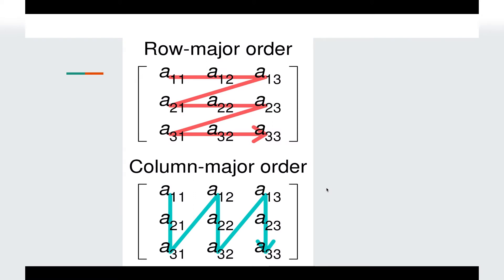This image shows both traversals. The first one is the row-wise traversal — what is happening here is that we first pick the first row and traverse through all the columns in it. If you look at the first traversal, the row is constant at one and the column is changing from one, two, and three. After the column has ended, we move to the next row, which becomes row number two, and we again traverse the entire column for row number two.